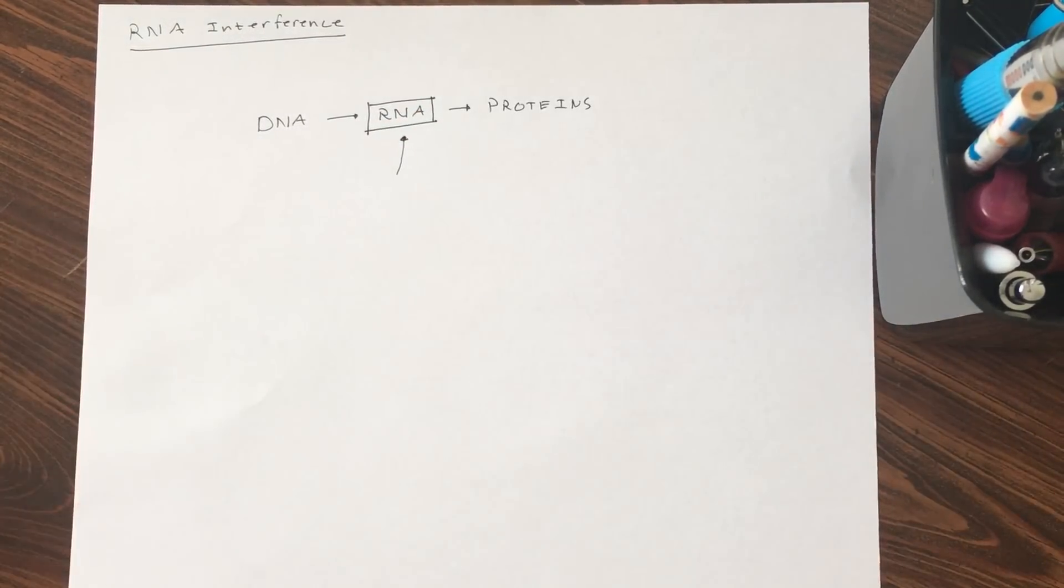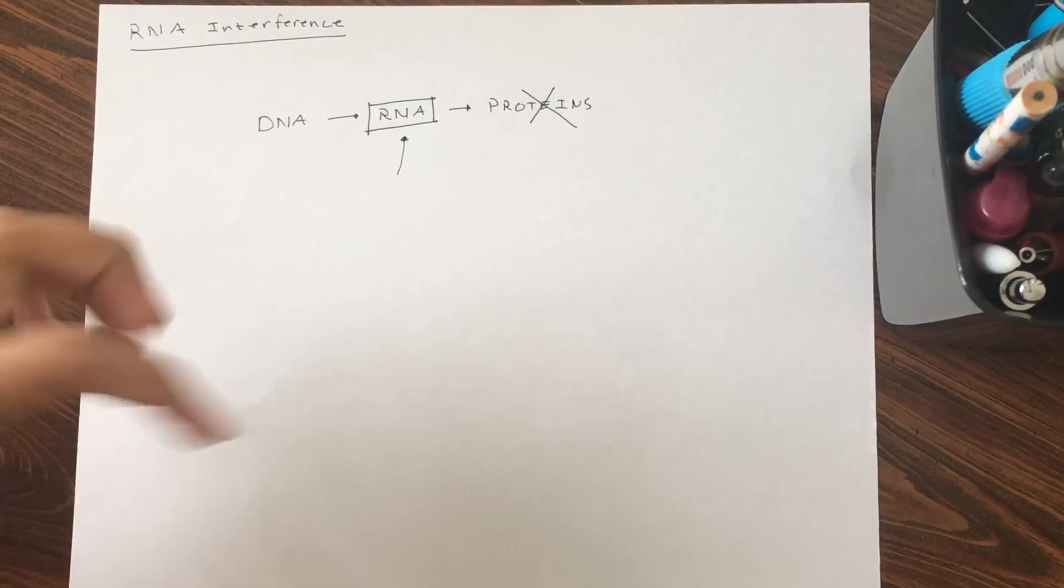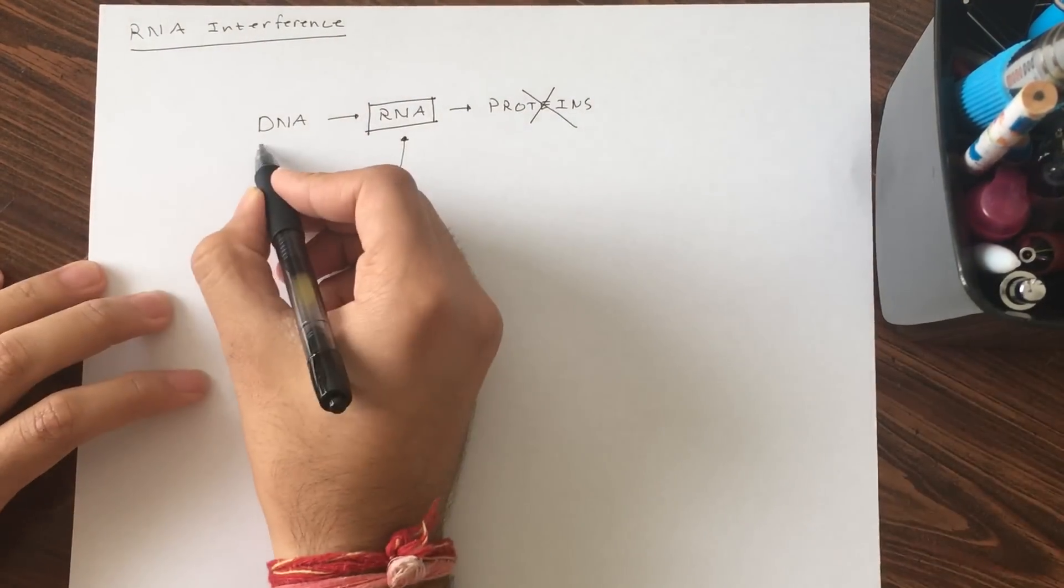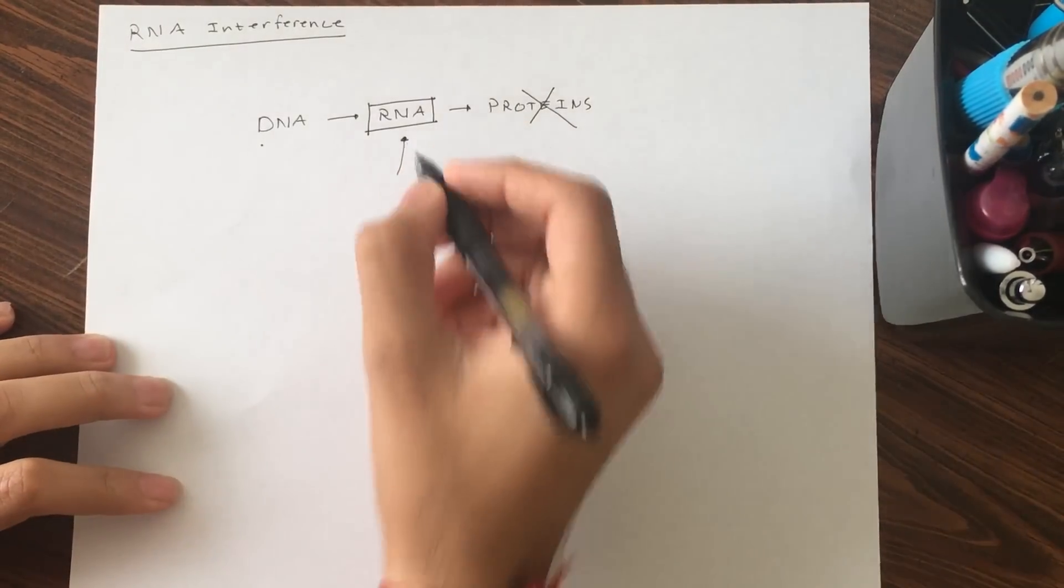What this does is it silences the RNA so you don't have proteins made. This is really useful when you have a certain gene making proteins that is correlated with a certain type of cancer or disorder, like kidney disorders or anything. This can be useful in many fields.